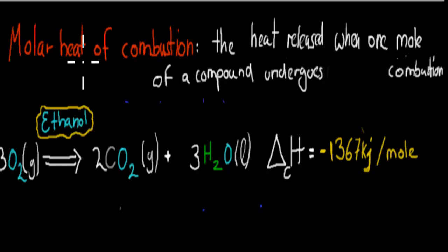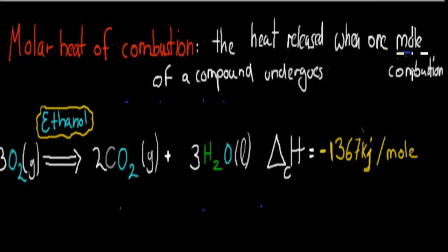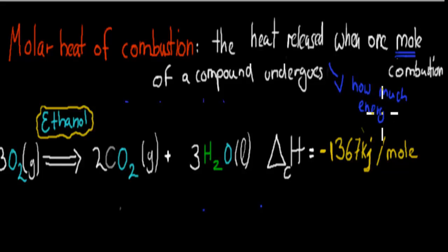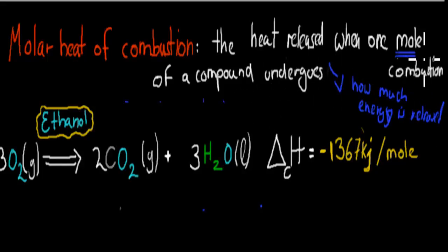The definition of molar heat of combustion is the heat released when one mole of a compound undergoes combustion. So one mole of a compound — which could be ethanol, octane, or anything else — undergoes combustion. How much energy or heat is released when one mole of a substance such as ethanol or octane undergoes combustion, for example in our engines.